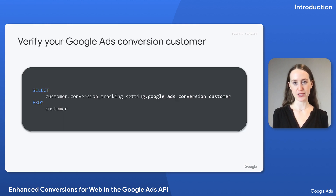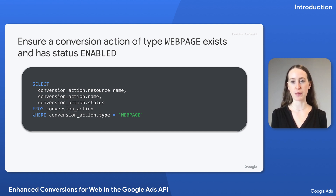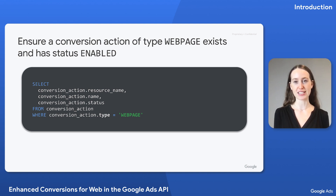You can verify which account is your Google Ads conversion customer by querying for the Google Ads conversion customer. Now that we know our Google Ads conversion customer ID, we can query that account to verify whether there is already a conversion action of type web page, and if so, whether it's enabled. If your Google Ads conversion customer doesn't yet have a web page conversion action, follow the instructions linked in the video description to create one.